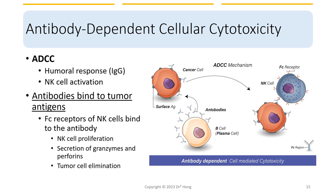Besides NK cells and T cells, antibodies can also fight cancer cells through antibody-dependent cellular cytotoxicity, abbreviated as ADCC. Specifically, after the variable region of IgG binds to the tumor antigen, its Fc region can bind to Fc receptors on NK cells. This causes NK cells to proliferate and secrete granzymes and perforins to help eliminate tumor cells.